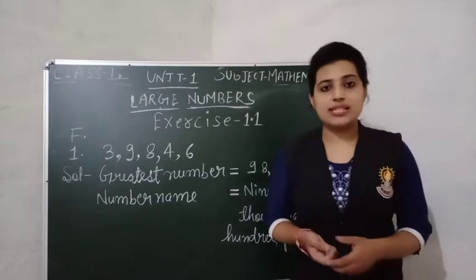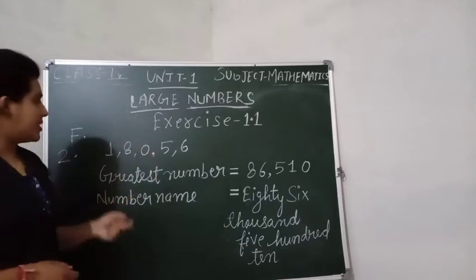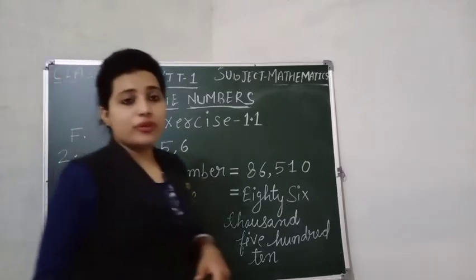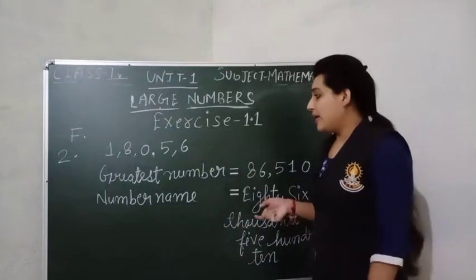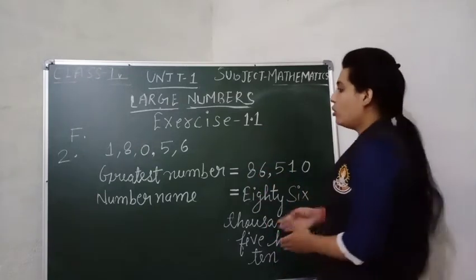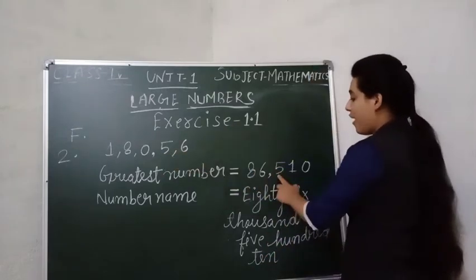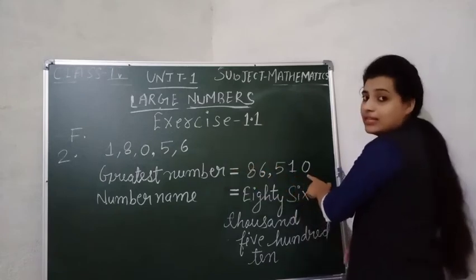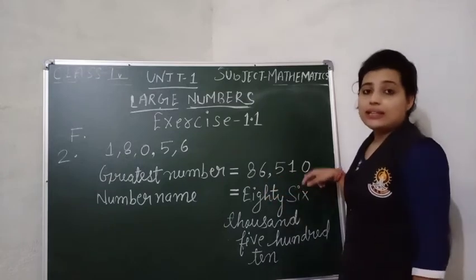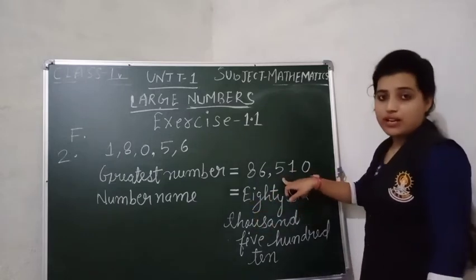Now the next question: in question 2, we have these five digits: 1, 8, 0, 5, 6. Here also we will make the greatest number, going from greatest to smallest. So the greatest number is 8, then 6, then 5, then 1, and then 0. So we get the number 86,510. And the number name is eighty-six thousand, five hundred ten.